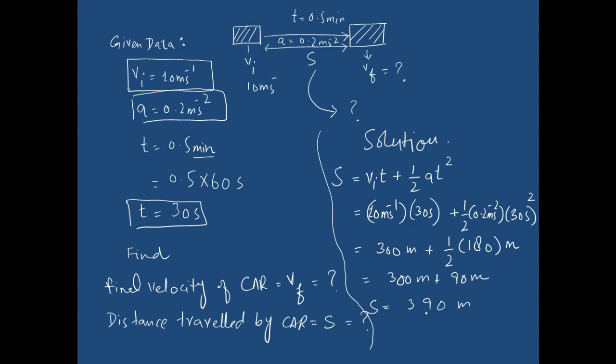The distance that the car travels in half a minute is 390 meters. Now calculate the final velocity. To calculate the final velocity, we have to use the third equation of motion: 2as equals vf squared minus vi squared. So 2 into 0.2 meters per second squared into the distance that we have calculated, 390 meters, equals vf squared minus the vi squared, that is 10 meters per second squared.